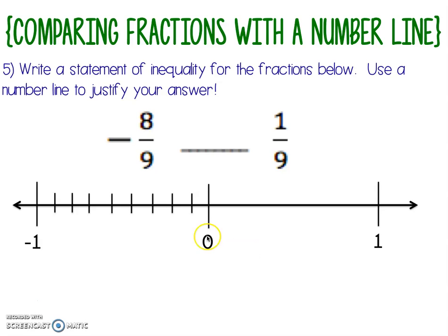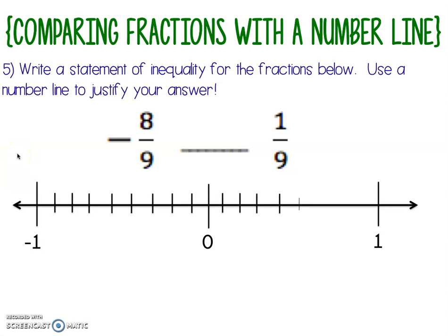Our eight tick marks create nine spaces — one ninth, two ninths, three ninths, four ninths, five ninths, six ninths, seven ninths, eight ninths, and nine ninths. Do the exact same thing on the positive side: nine spaces means we want eight little tick marks.